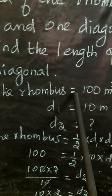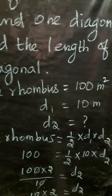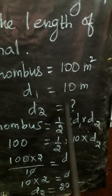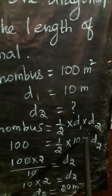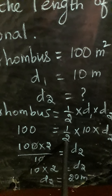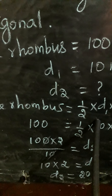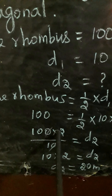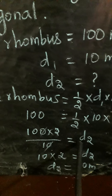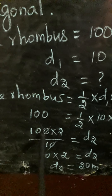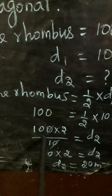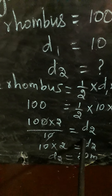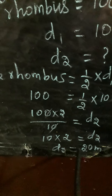Substitute the values for area and D1 into the equation. We get 100 equals half into 10 into D2. The denominator 2 moves to the other side as multiplication, and the multiplier 10 moves to the other side as division. So 100 into 2 divided by 10 equals D2. Cancelling — 100 divided by 10 is 10, then 10 into 2 equals 20. Therefore diagonal D2 equals 20 metres.